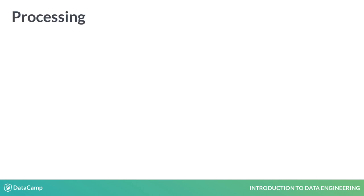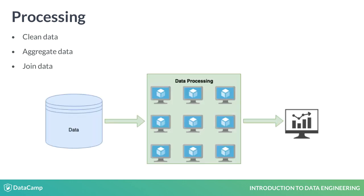Second, data engineers use tools that can help them quickly process data. Processing data might be necessary to clean or aggregate data or to join it together from different sources. Typically, huge amounts of data have to be processed. That is where parallel processing comes into play. Instead of processing the data on one computer, data engineers use clusters of machines to process the data. Often, these tools make an abstraction of the underlying architecture and have a simple API.